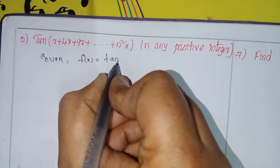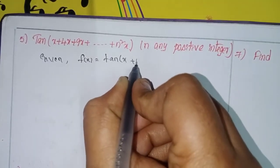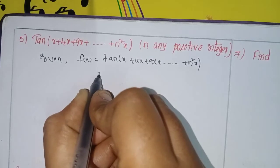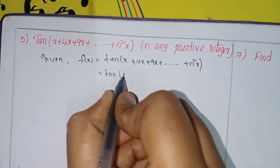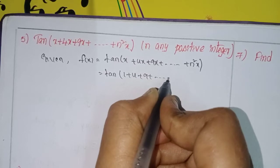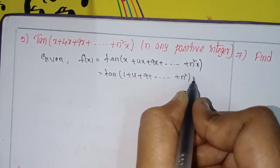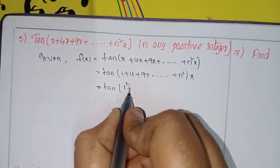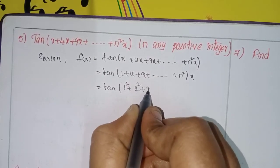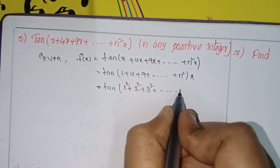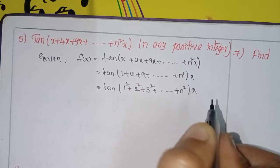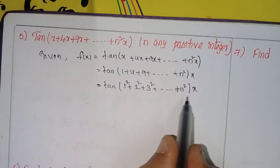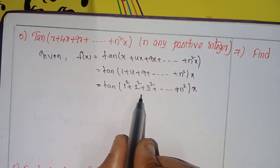Next, the 5th given function: f(x) = tan(x + 4x + 9x + ... + n²x). You can write this as tan((1 + 4 + 9 + ... + n²)x). We can write 1 as 1², 4 as 2², 9 as 3², and so on, plus n². So it is in the form of tan(ax), where a equals this sum.